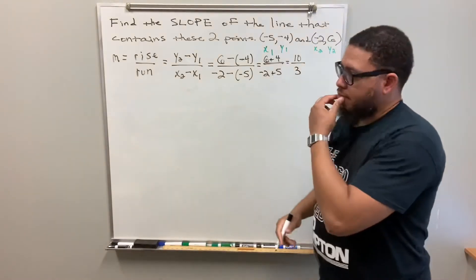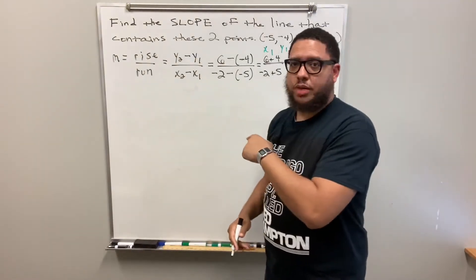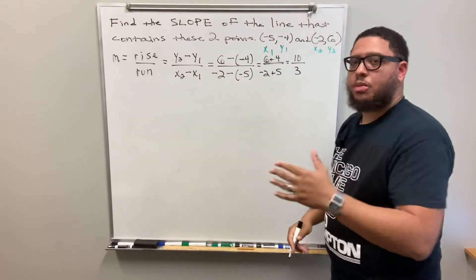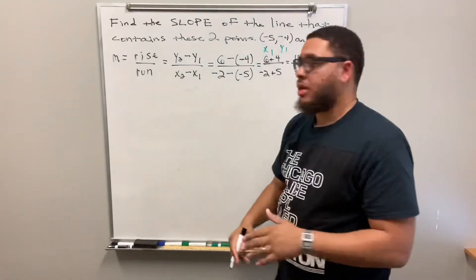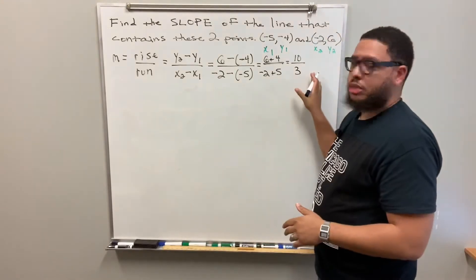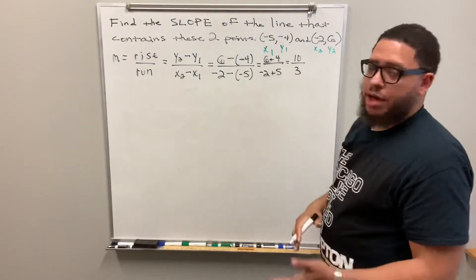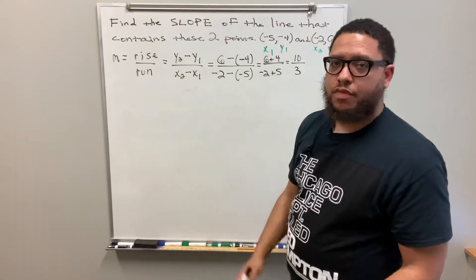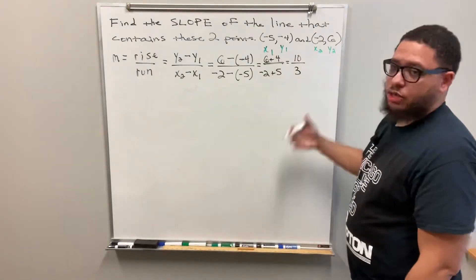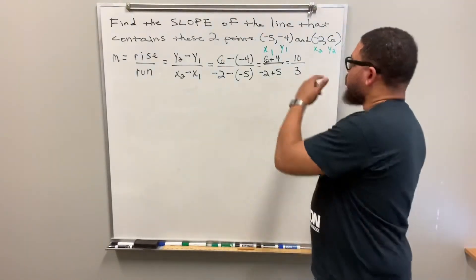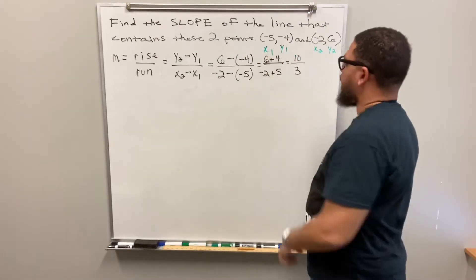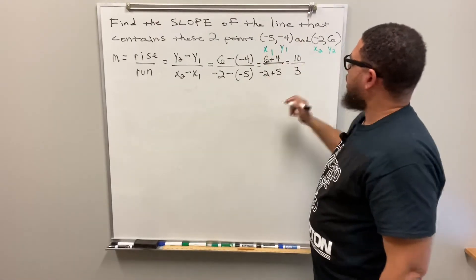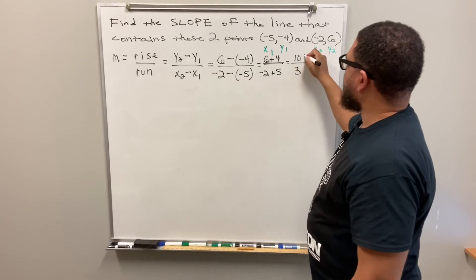So my slope is ten over three. I know it's ten over three because I can't reduce this fraction — ten and three don't share a common factor besides one, so dividing by one still gives ten over three. Always try to reduce fractions, but in this case we just leave it as ten over three.